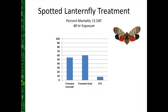Spotted lanternfly is a non-native pest that could cause huge damage in our landscapes and agricultural industries. Identified in southeastern Pennsylvania just a few years ago, it has since spread to New York, New Jersey, Delaware, Maryland, and Virginia, with a host range of over 70 species. TransTech as a lower bark spray is becoming the industry standard to treat for this pest, showing extremely effective mortality rates compared to untreated plants.